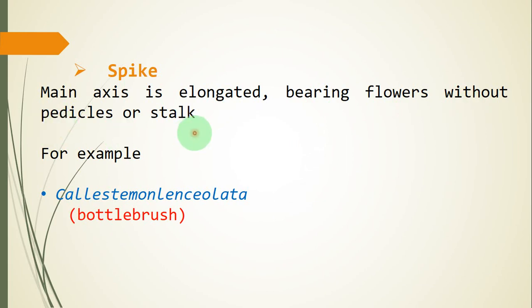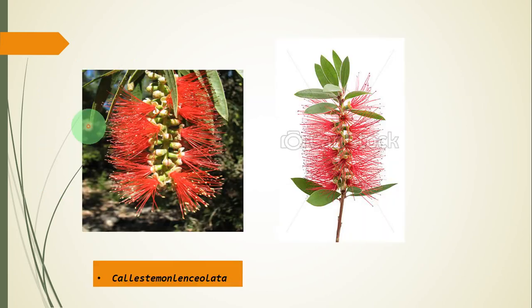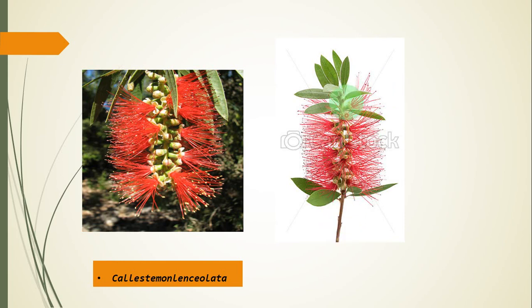The next type is spike. In a spike, the main axis is elongated bearing flowers without pedicel or stock — without pedicel means sessile flowers. A common example is Callistemon lanceolatus, commonly called bottle brush. You can see individual flowers on the main stock — these flowers have no individual stock, so they are sessile or non-pedicellate flowers.